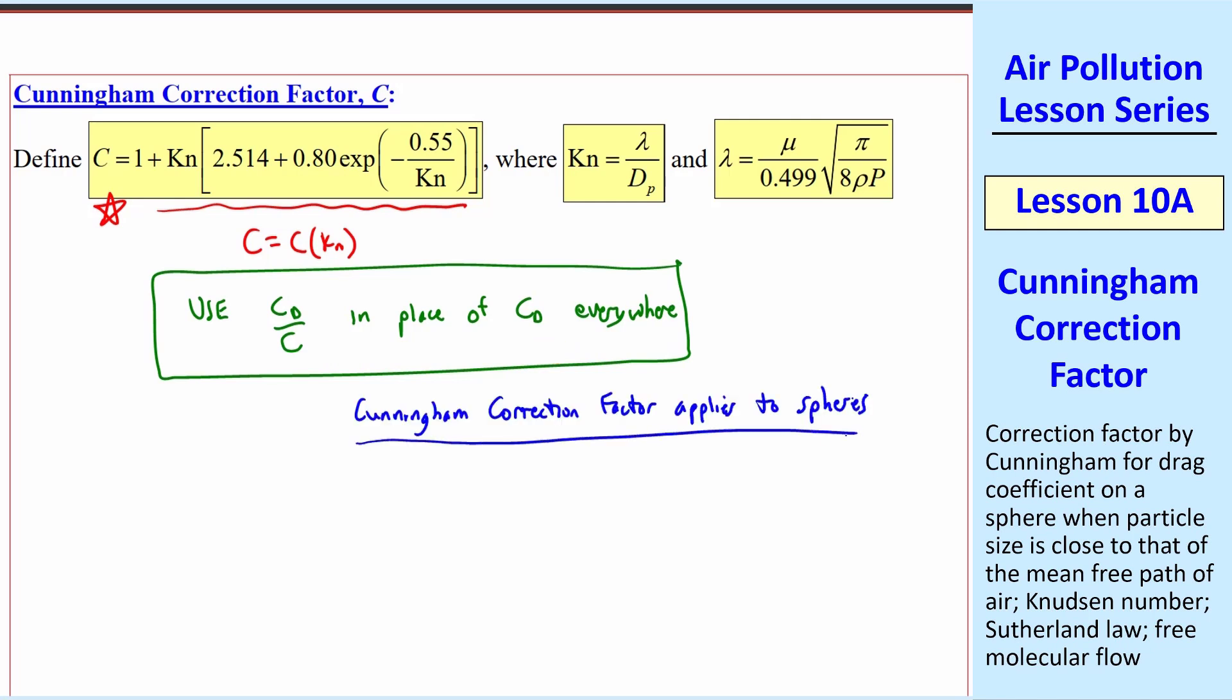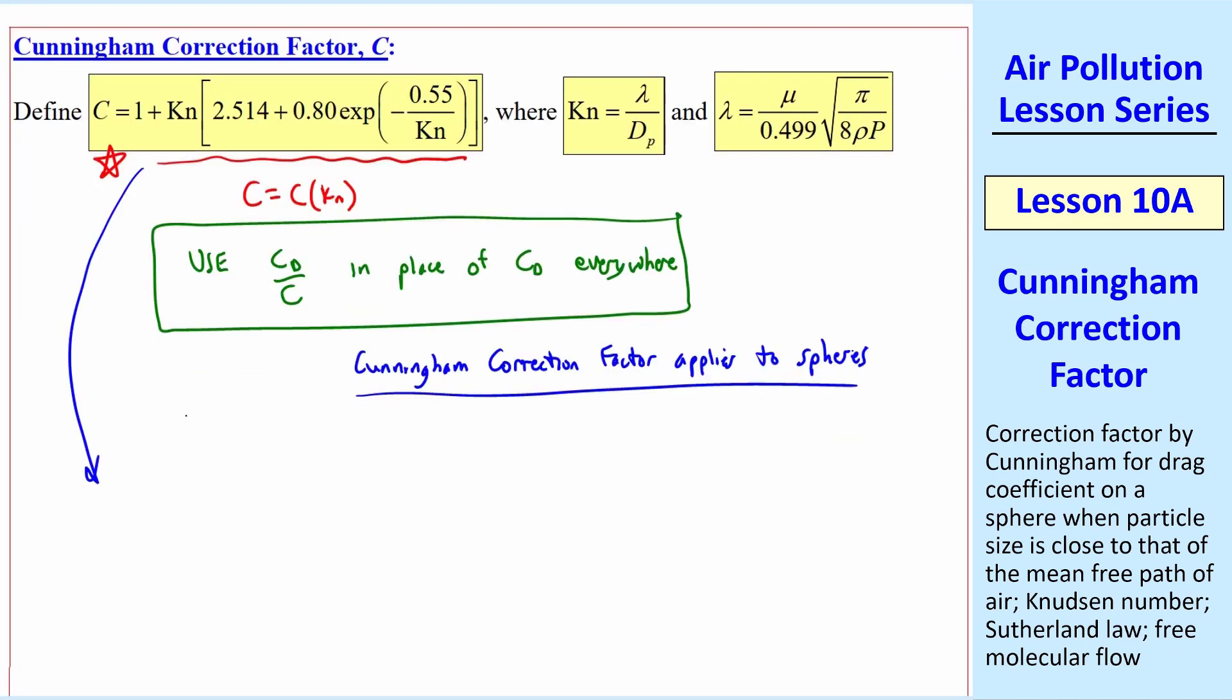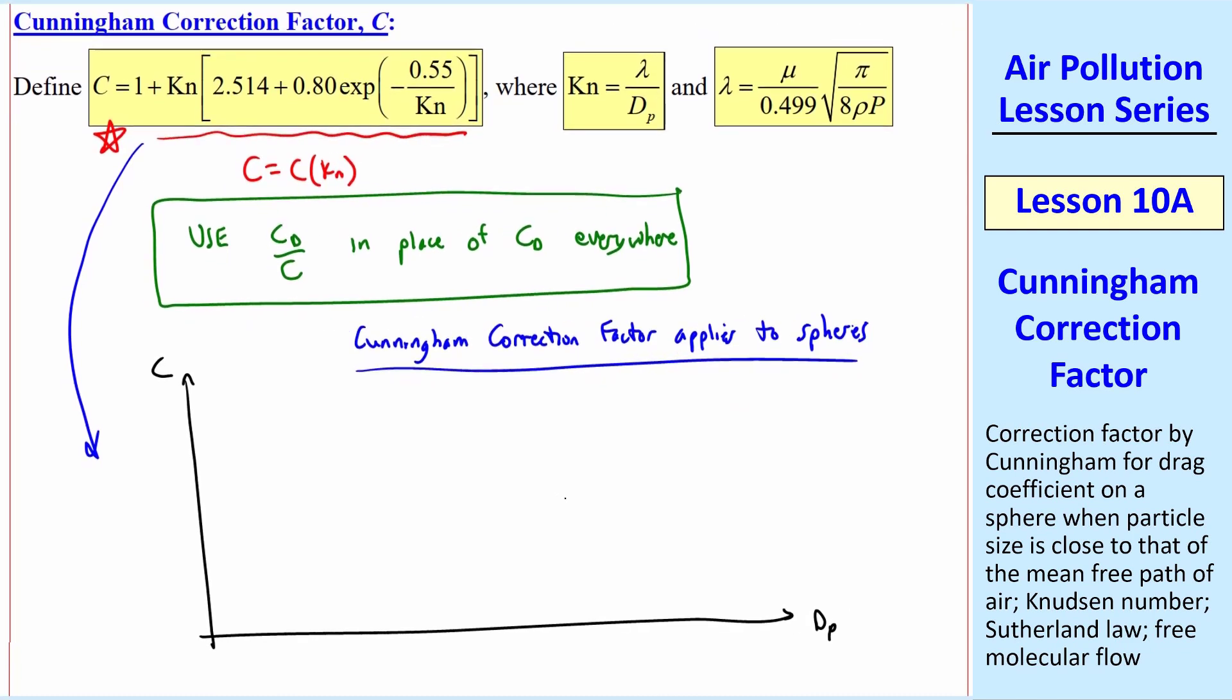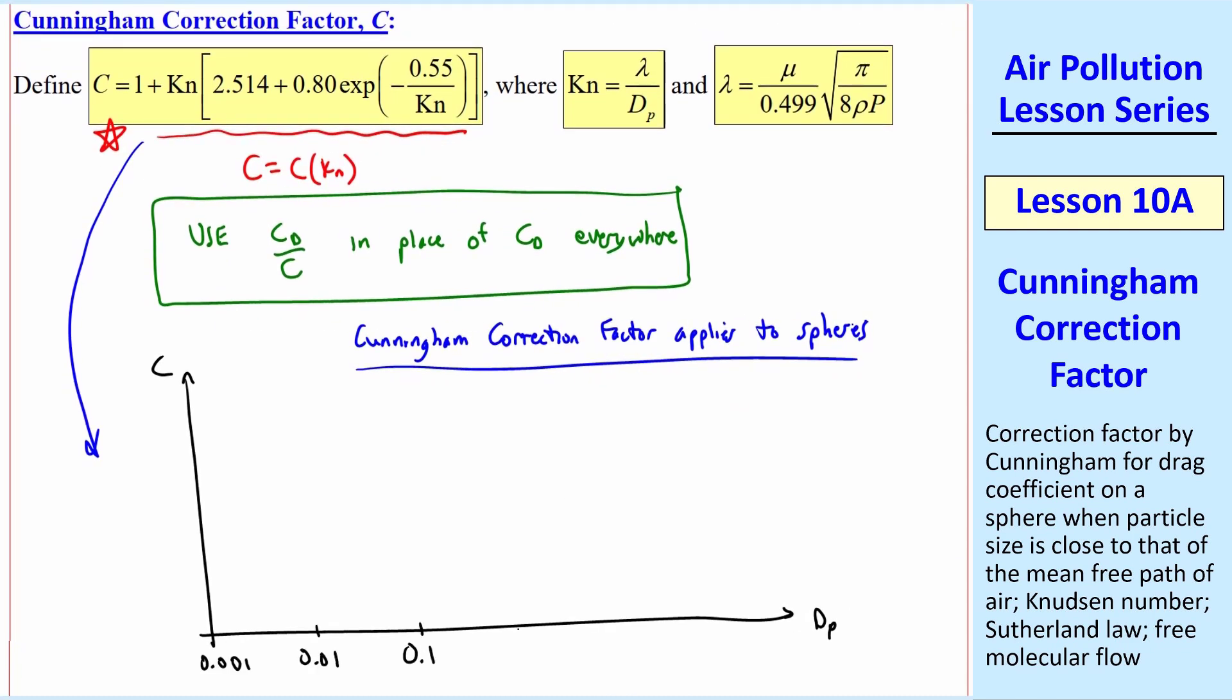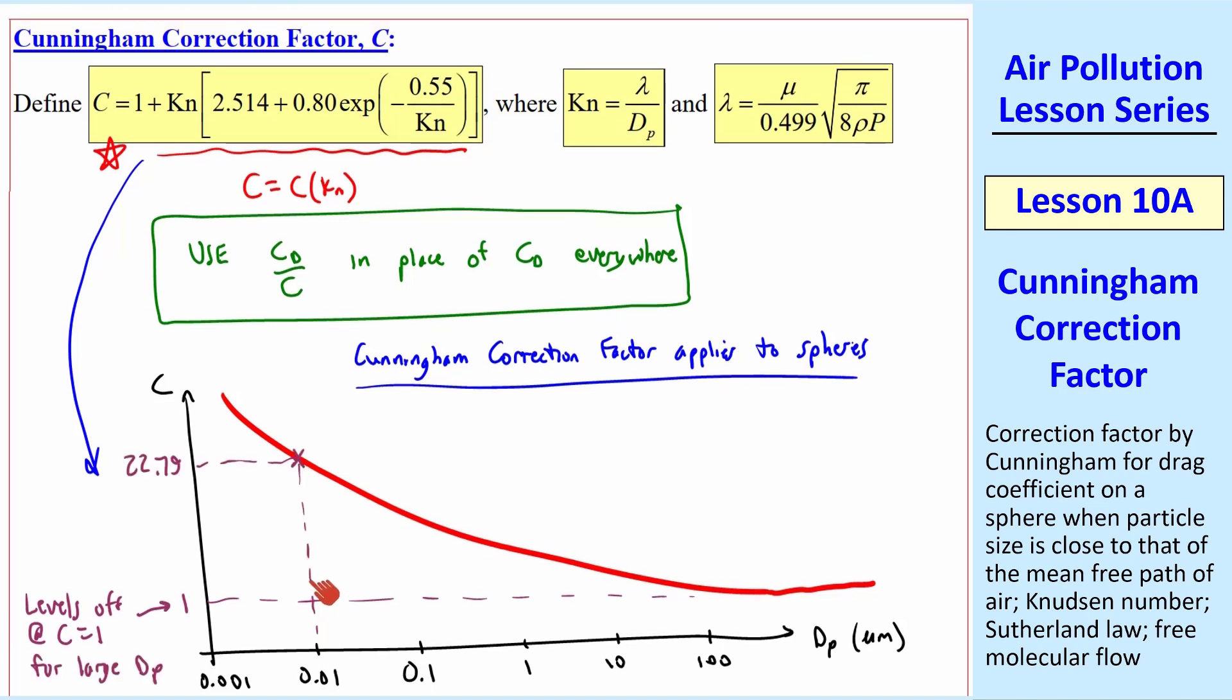Note that the Cunningham correction factor applies to spheres. If we have non-spherical particles, we usually calculate some kind of equivalent spherical diameter, so that we can use the Cunningham correction factor and the drag coefficient for a sphere. This is similar to what we did with pipes when we defined a hydraulic diameter. If we plot this equation for C as a function of dp, and I'll use a log scale for particle diameter, and these are in microns. By the way, C itself is non-dimensional. The curve looks something like this.